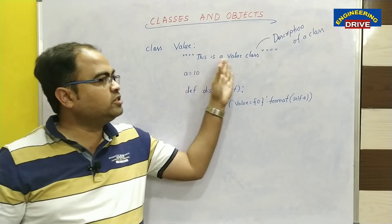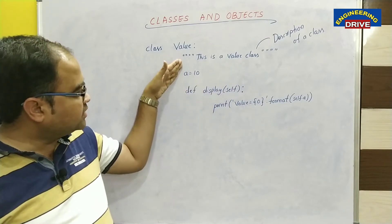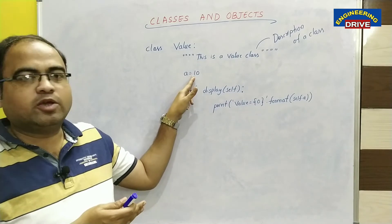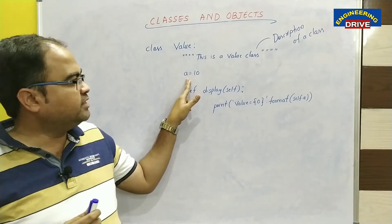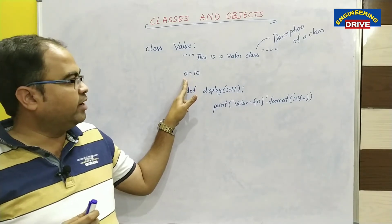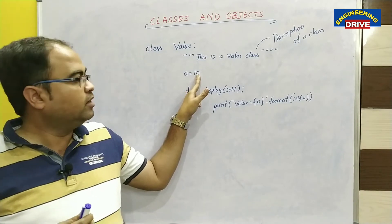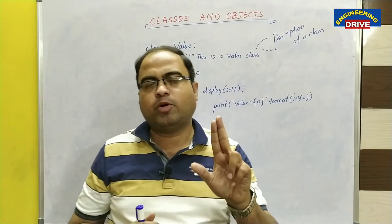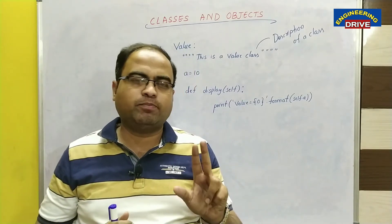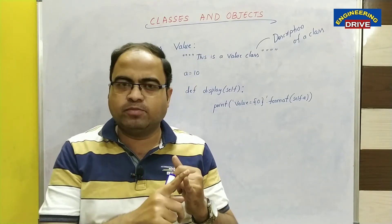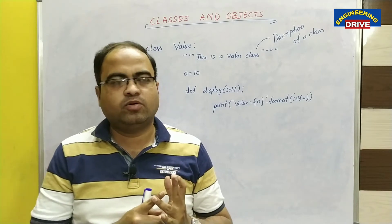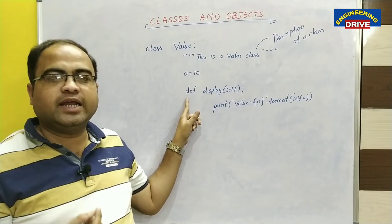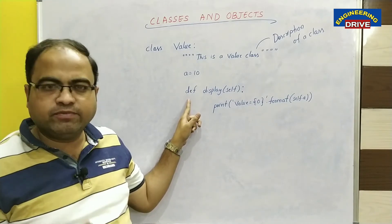Once you have written the description, in the same alignment, we now declare a variable. This is an instance variable — variable 'a' with the value 10. Next, I want to make use of methods. In every class, there are two important attributes: one is variables, and another one is methods. So I have taken one variable with the value 10, and now I want to declare and define one method.